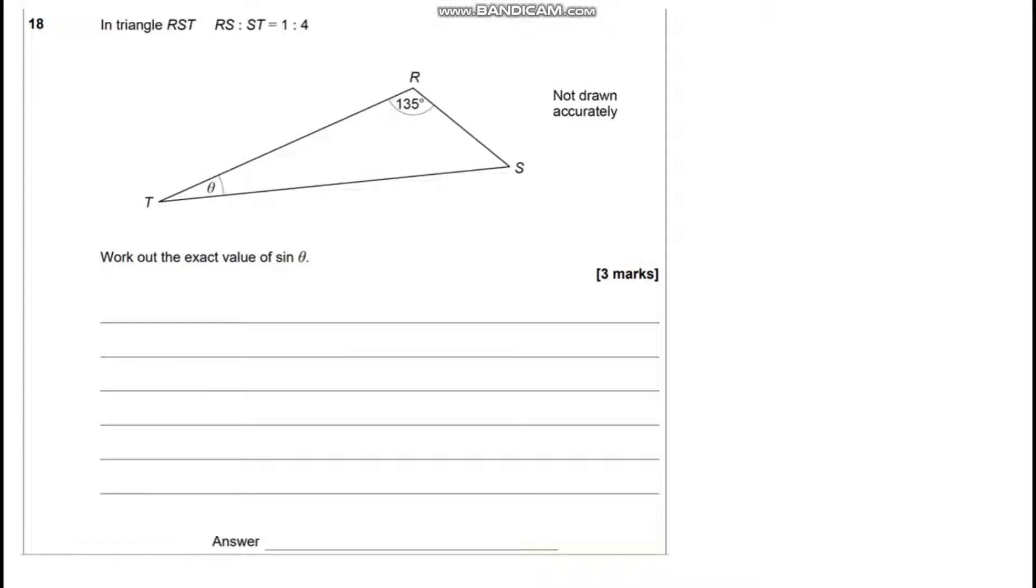We're also told that the triangle's sides, RS to ST, are in the ratio of 1 to 4. So if we say that RS is X, ST will be 4X, so I'm going to put those on my diagram.